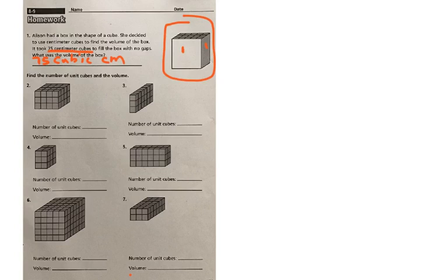Number 2 through 7 tells you to find the number of unit cubes and then find the volume. And again I recommend that you just cut it into nets and then count that face just like we did on the previous page here.